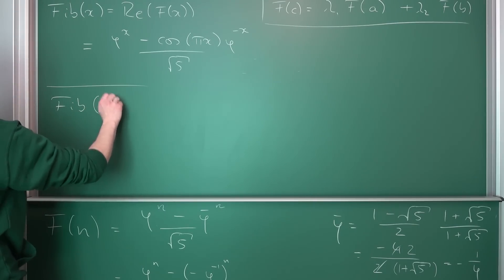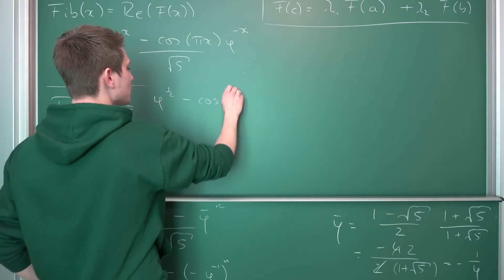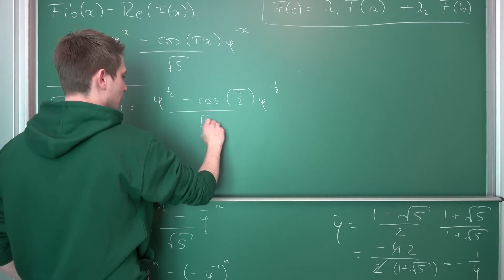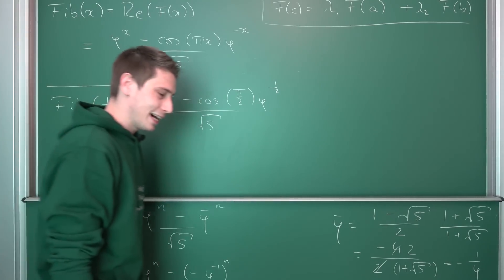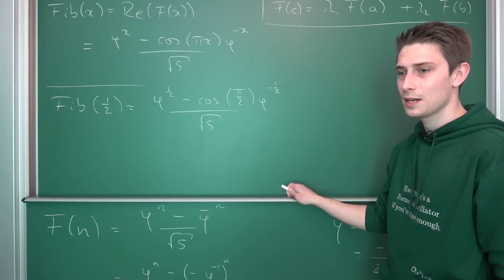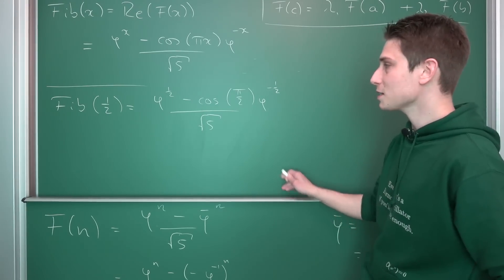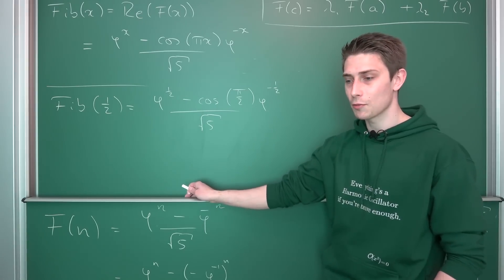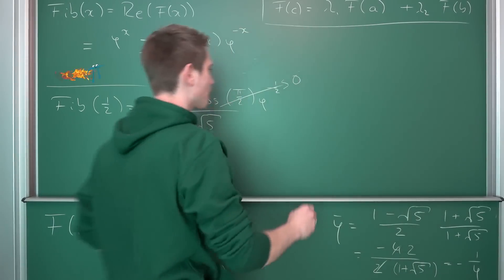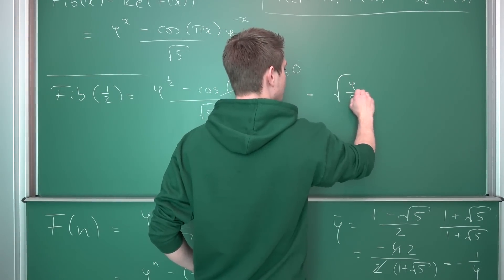Fib of one half is thus phi to the one half power minus the cosine of pi over 2, phi to the negative one half power over square root of 5. I have chosen the one half Fibonacci number here because it actually gives you a pretty nice value. The most important thing is that we are going to get rid of this cosine part. Well, cosine of pi over 2, if we start here, this is just zero. So this whole part is going to vanish.